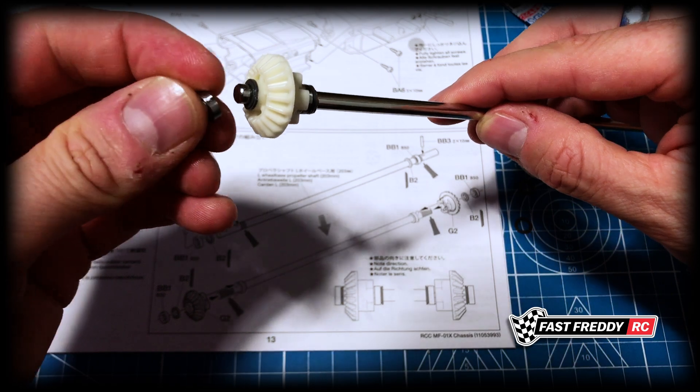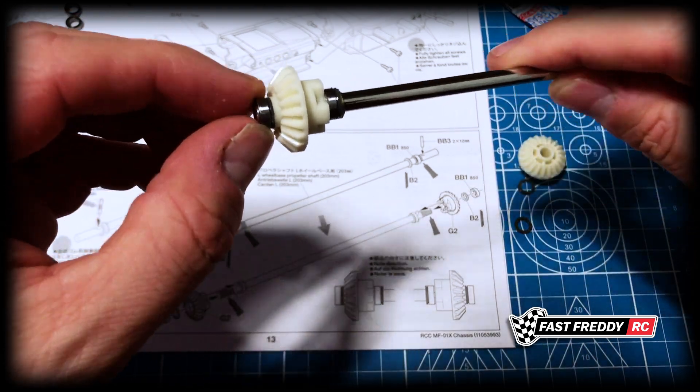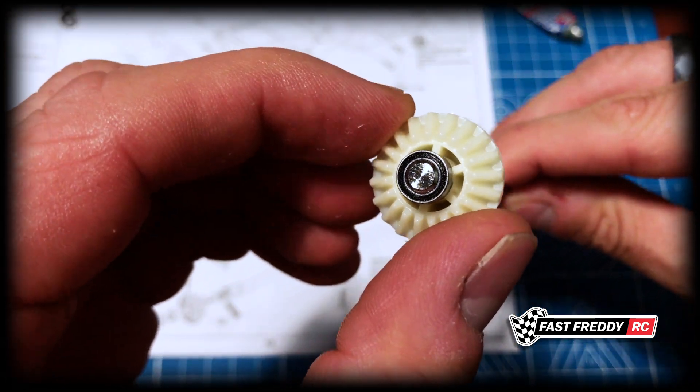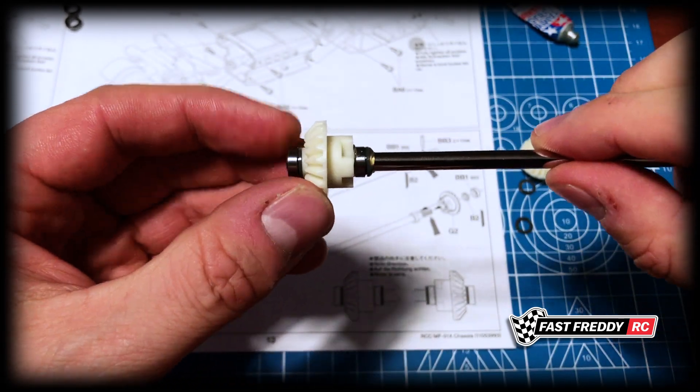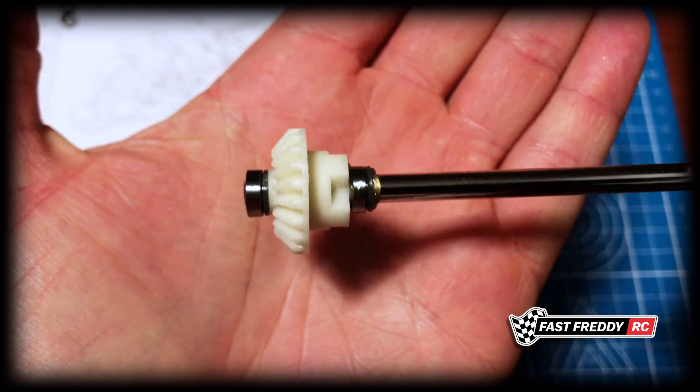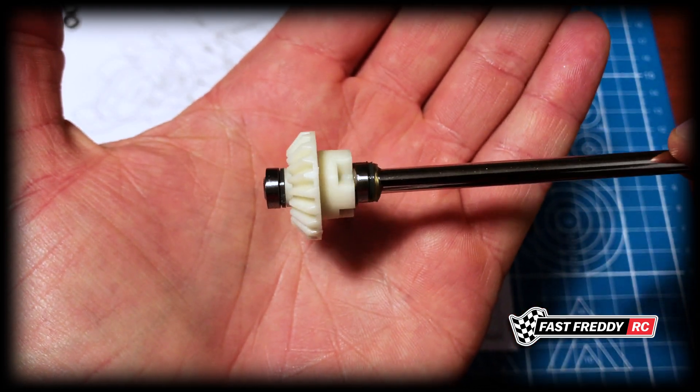And then we have our BB-1, which is the ball bearing that's replacing that, that's going to sit on like that. So that is how it's going to sit. And that is how it should look when you've finished it.